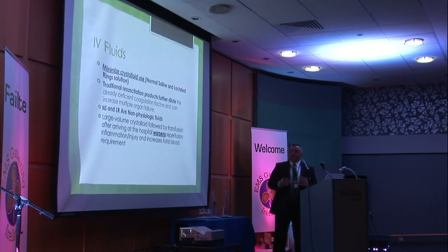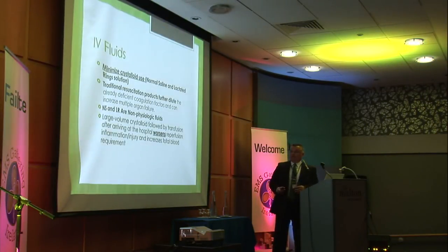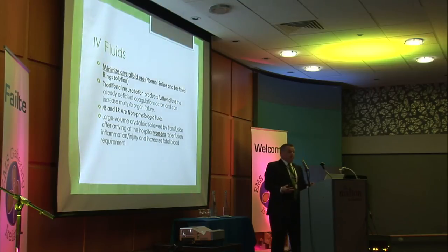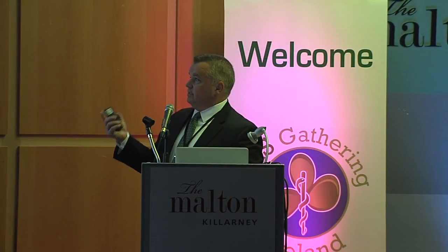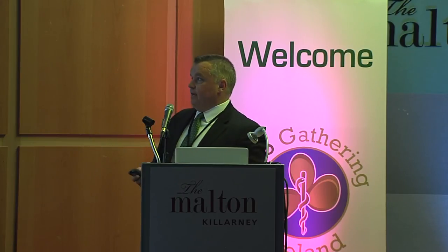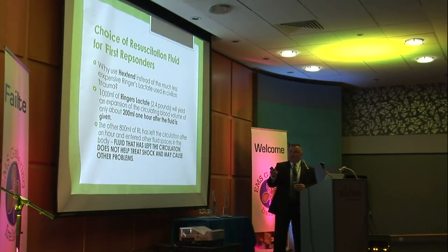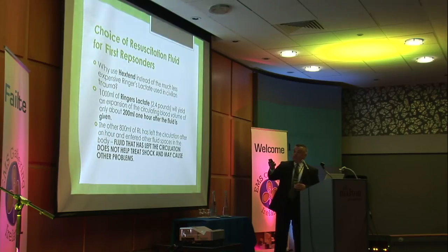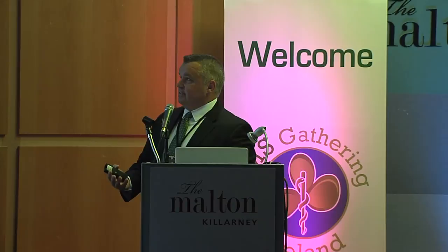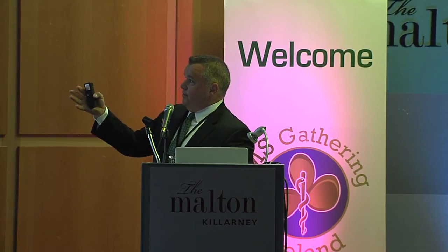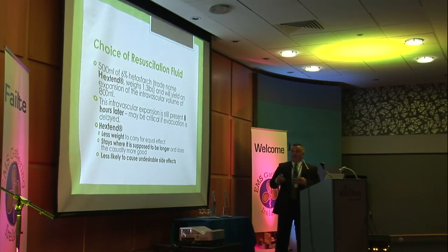For IV fluids, minimize crystalloid use. Normal saline and Ringer's lactate — the traditional resuscitation fluids — can further dilute your clotting factors and are non-physiologic in large volumes. Large volumes cause pro-inflammatory processes that worsen outcomes in the emergency department during massive transfusion. Your goals are: improve level of consciousness and achieve a palpable radial pulse — don't over-resuscitate. My preferred choice is Hextend over Ringer's lactate or normal saline. You need 2.4 pounds of Ringer's lactate to expand circulation by only about 200 mL after administration, whereas 500 mL of Hextend provides 1.3 pounds of intravascular expansion that persists for eight hours.